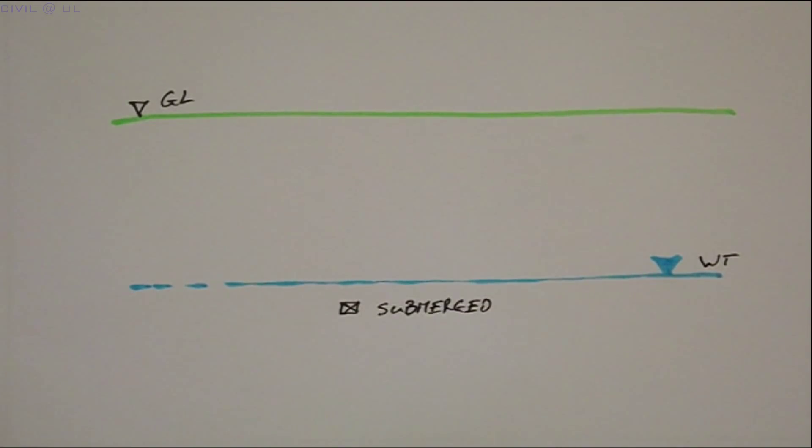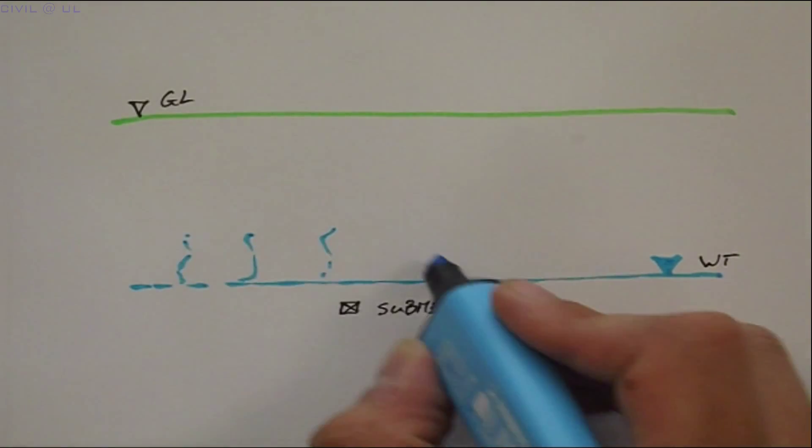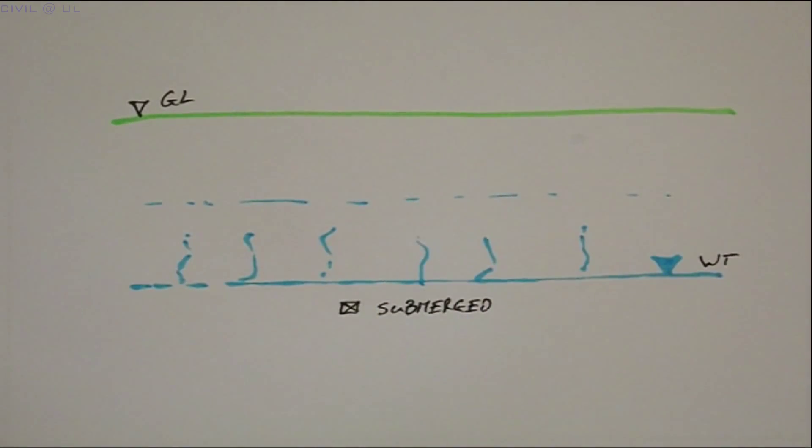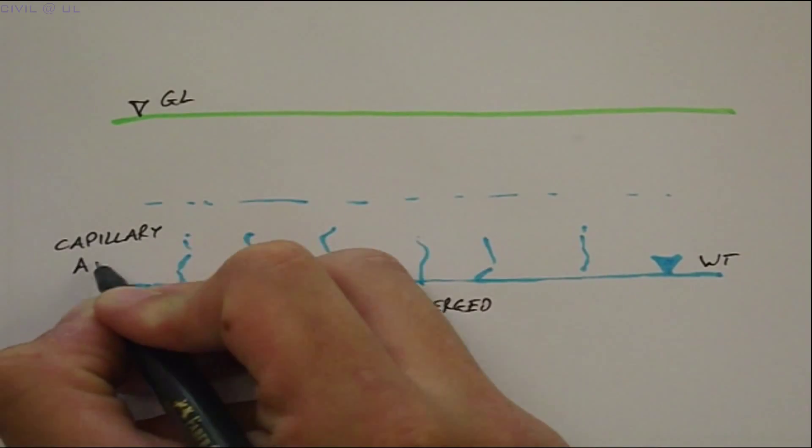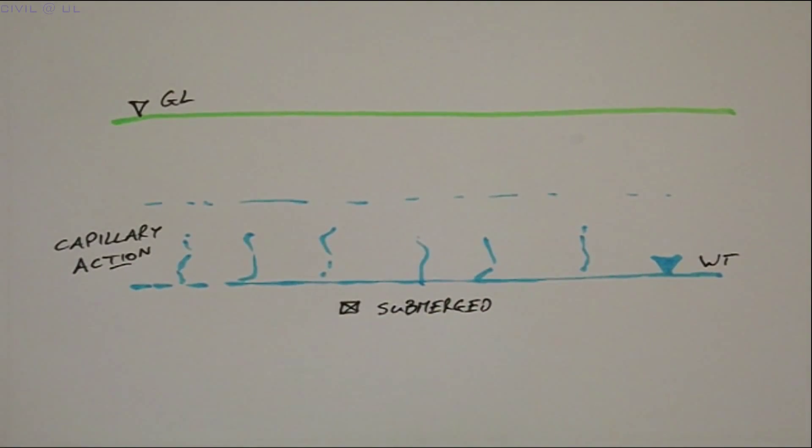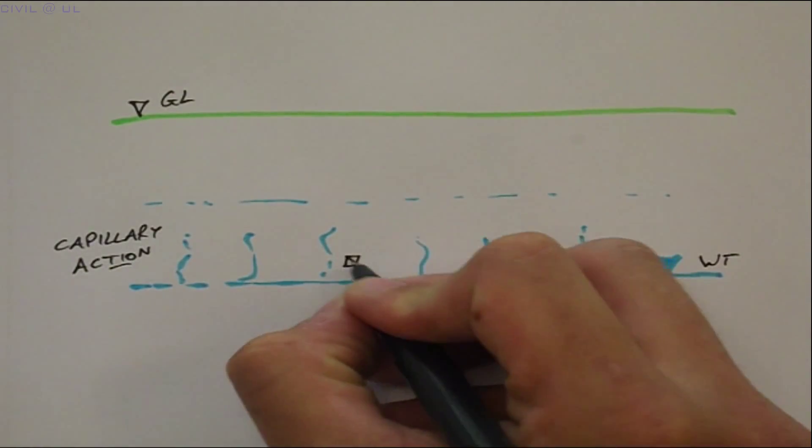And obviously all of its voids are filled with water. Immediately above the water table, the void space often remains filled with water, due primarily to capillary action. The soil in this zone is referred to as saturated.